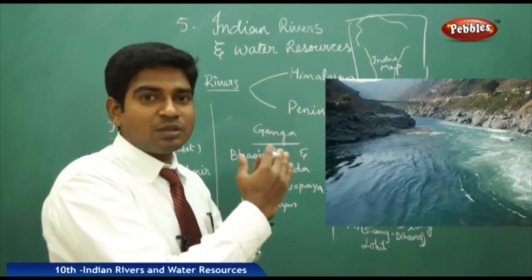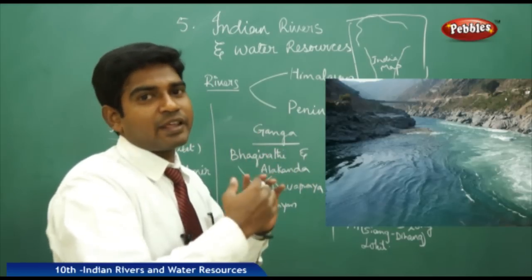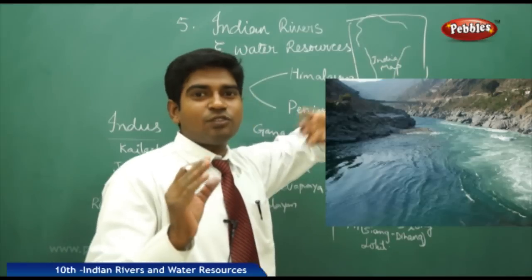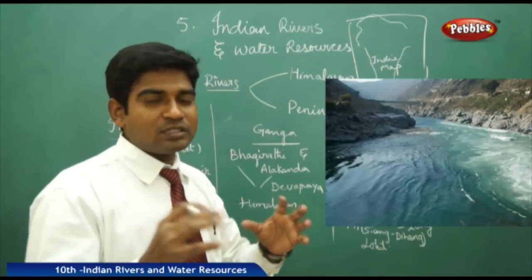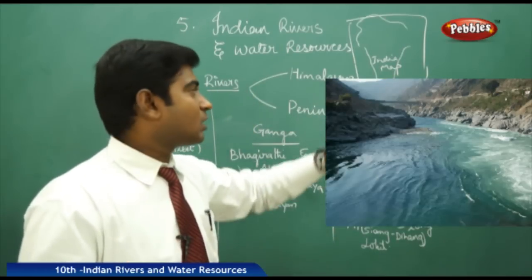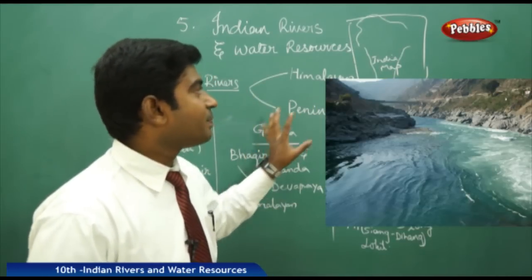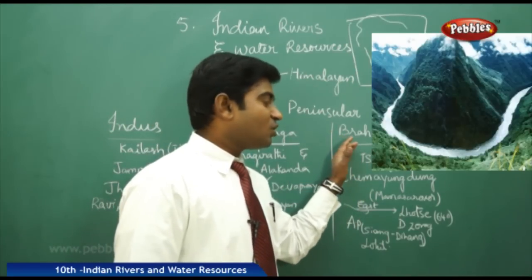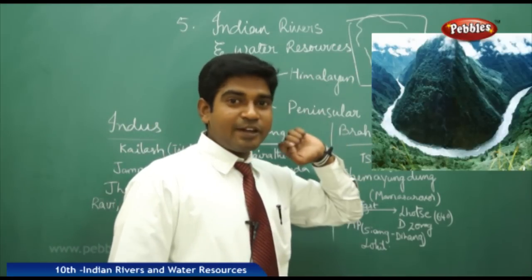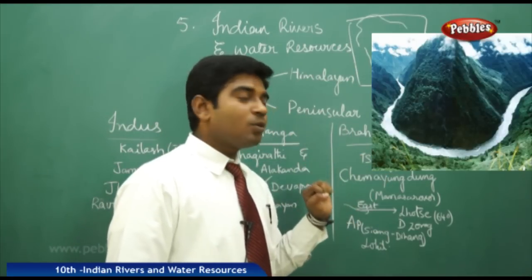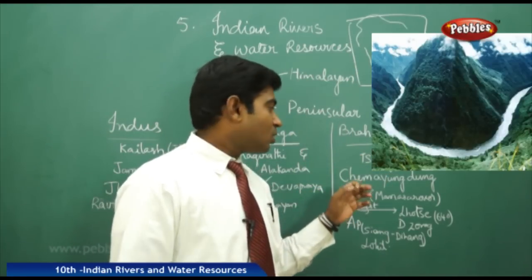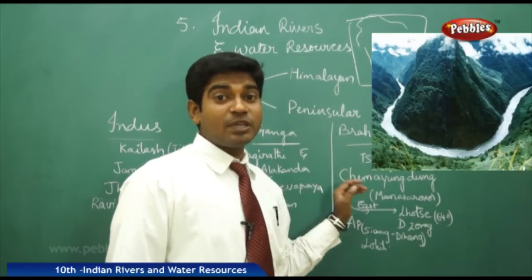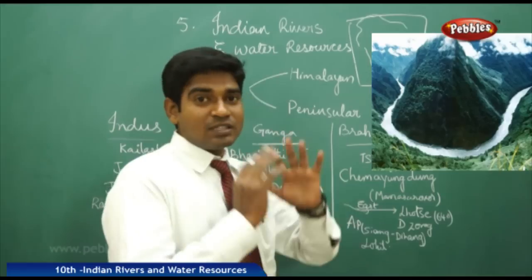The Ganga flows through Uttar Pradesh, moving towards Bihar and some parts of West Bengal. It also has influence in the Punjab and Haryana regions, covering a major area. Nearly three to five lakh acres of crops are irrigated using the Ganga belt. The most important river next is the Brahmaputra, which originates in Tibet.